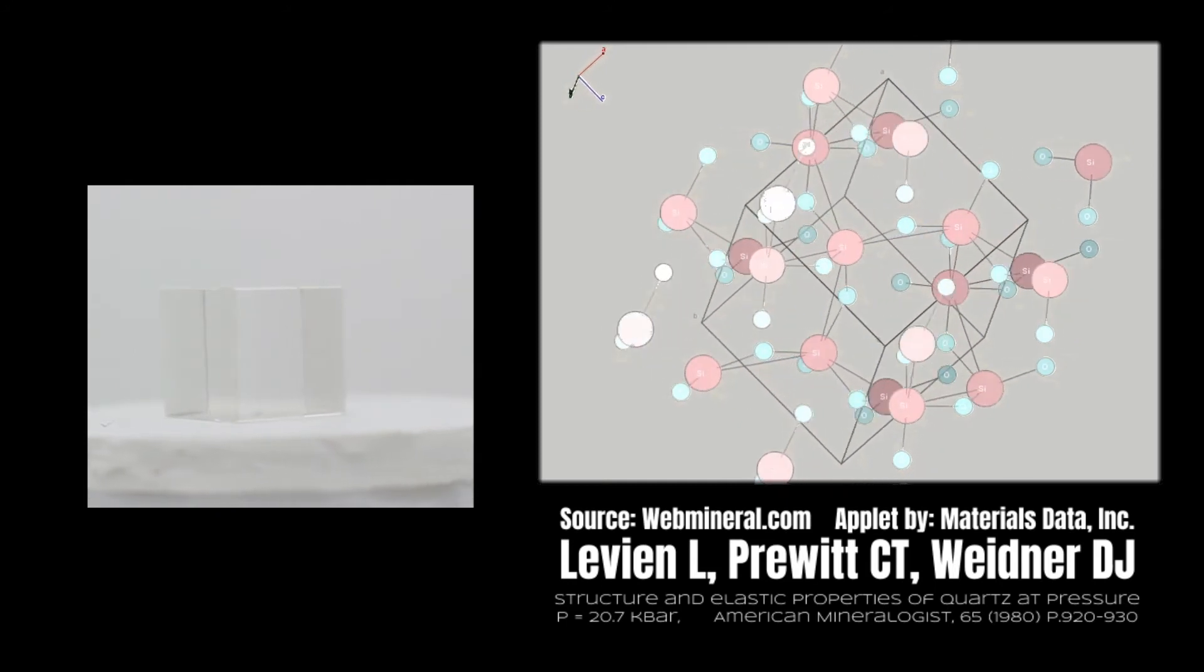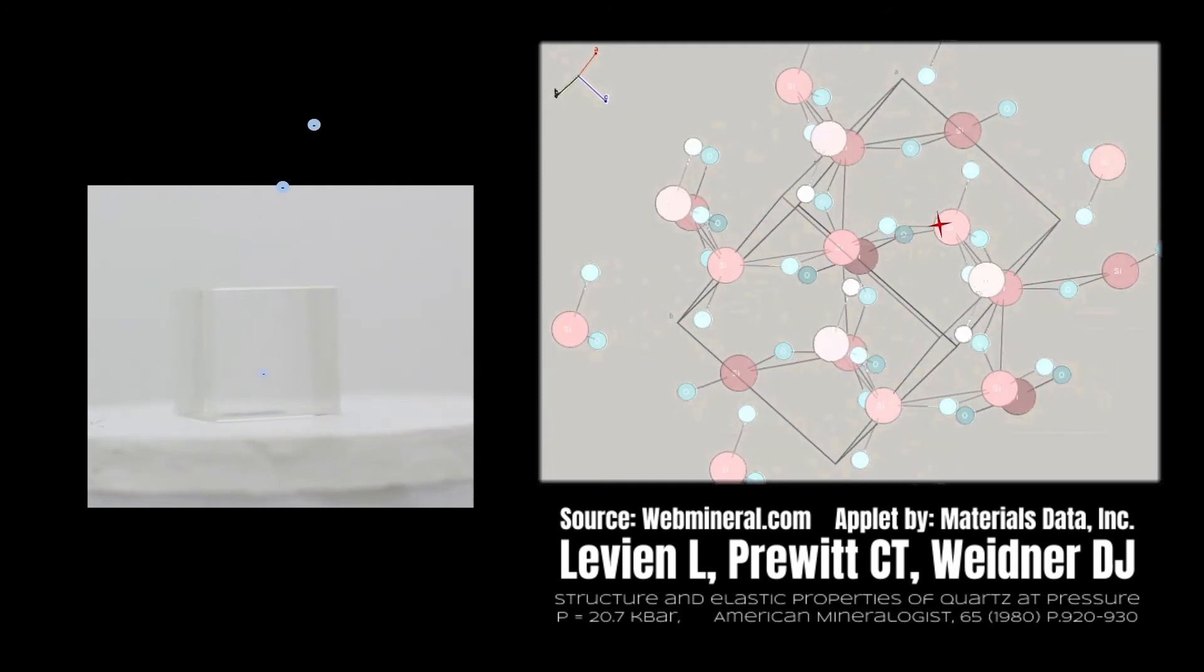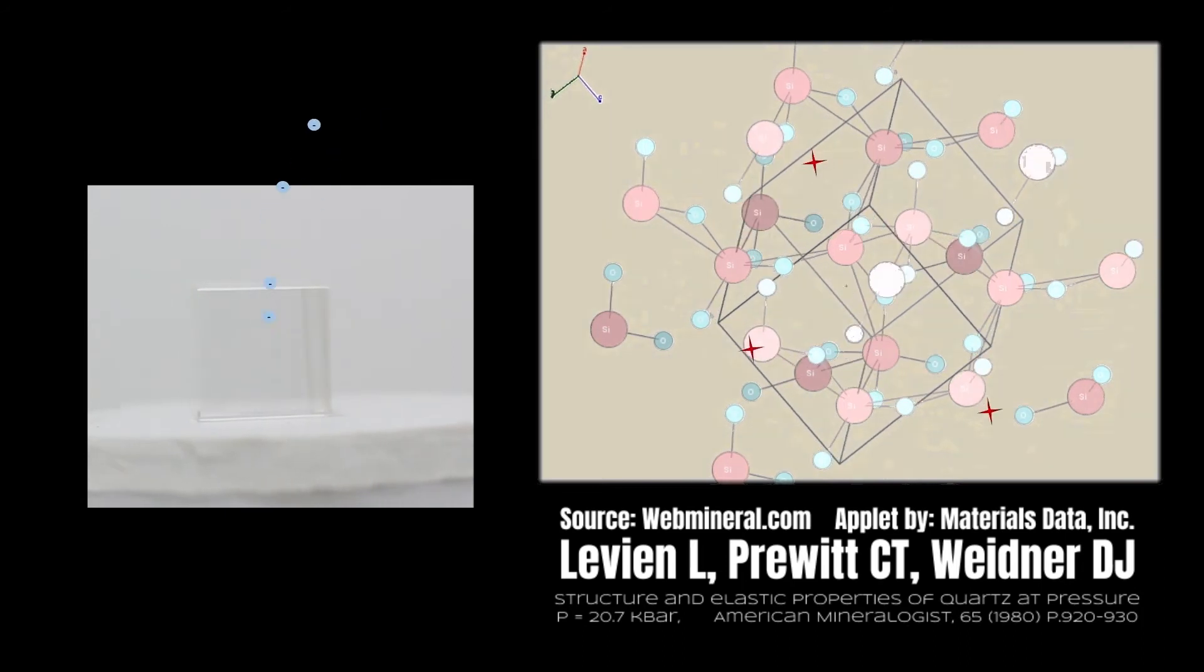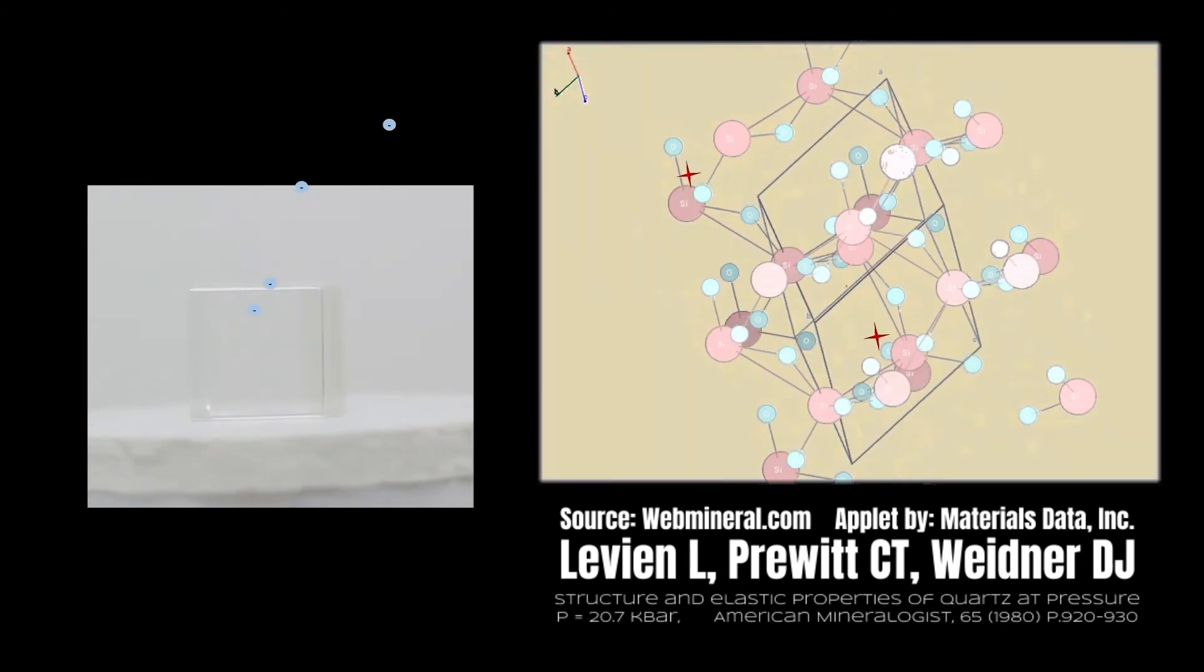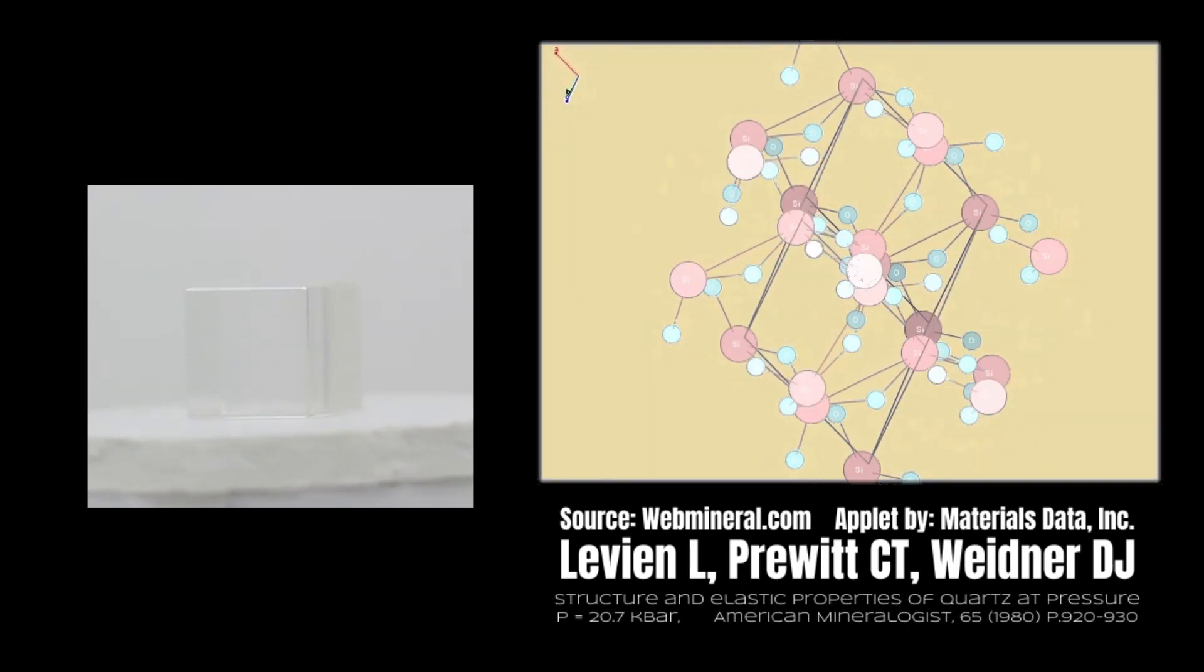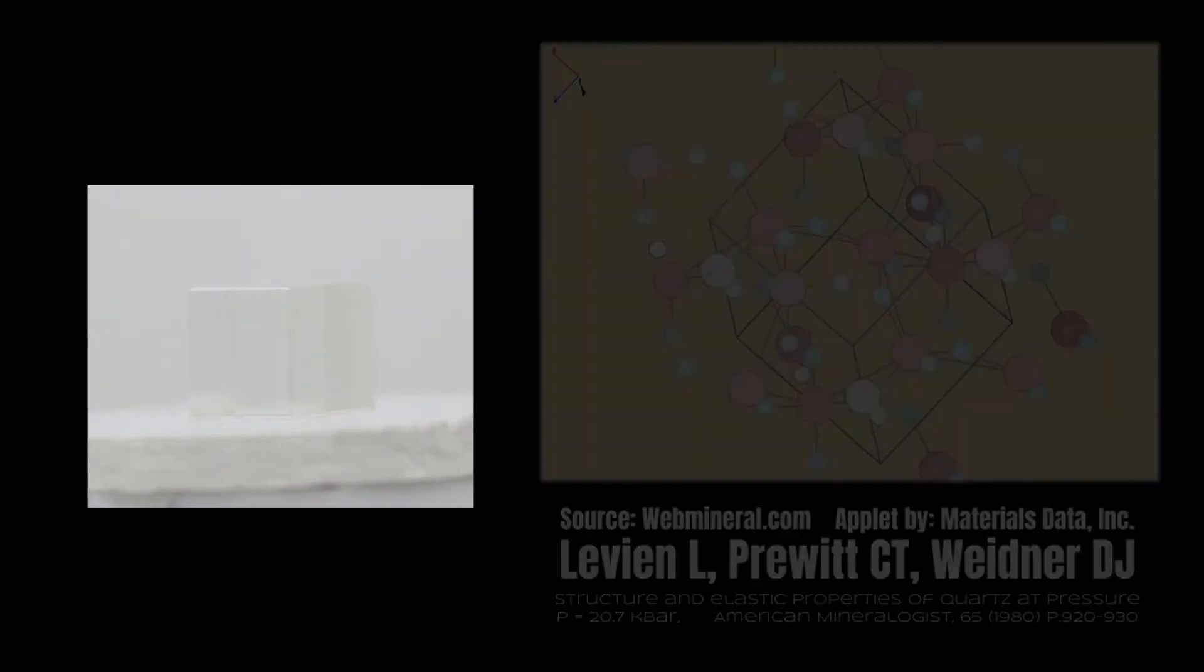By irradiating the stone we can create defects in the microscopic level that allows for visible range electronic transitions, producing color in an originally colorless material.